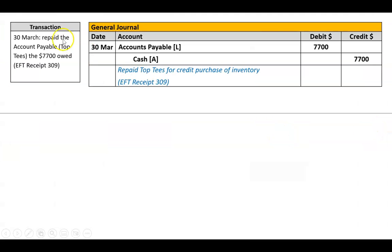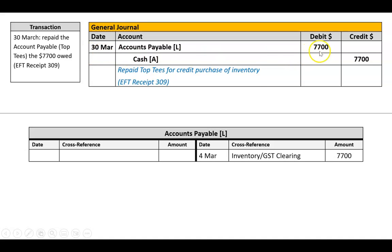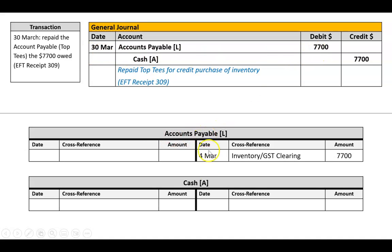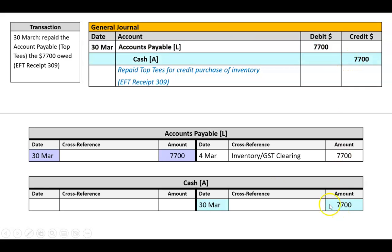Posting to ledgers: 30th of March, repaid accounts payable. We go to the ledger for accounts payable and cash. We can see from earlier in the month we owed them $7,700. Now when we pay them back we do a debit here, and now this is zero — which makes sense, if I owed someone $7,700 and paid them back I'd owe them zero. And in cash I did a credit of $7,700. Last thing is references: in accounts payable I'll write cash, and in cash I'll write accounts payable.